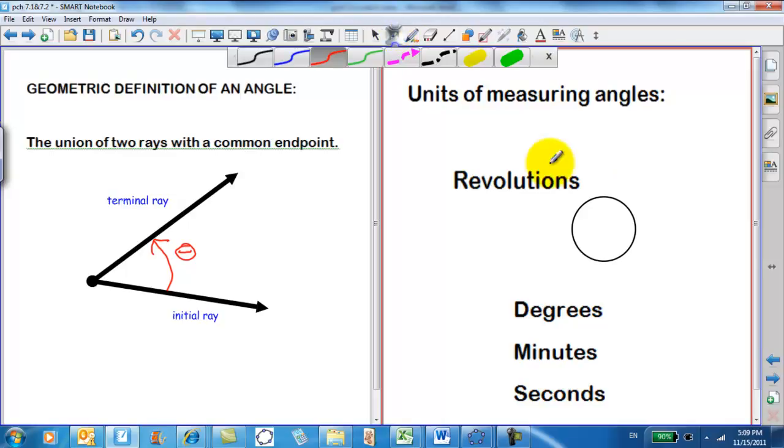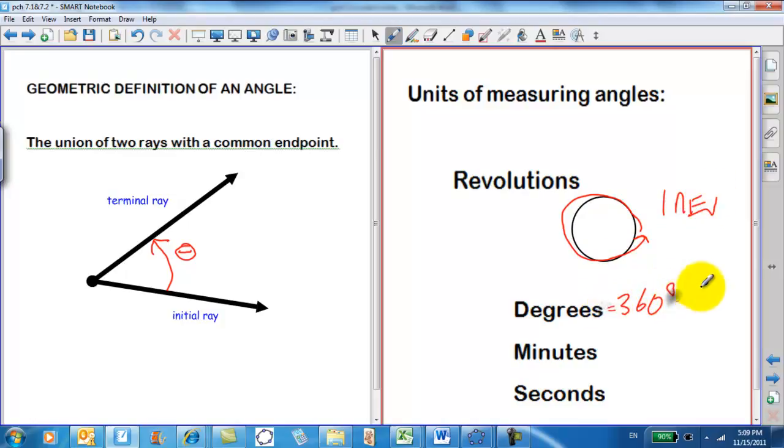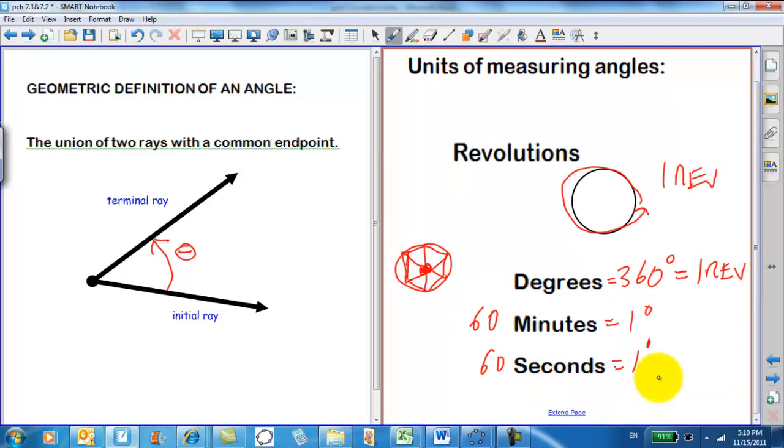If we go once around the circle, that's one revolution. It's also equal to 360 degrees, equals one revolution, based on an old Babylonian system of 60. The theory was that they would take and fit six equilateral triangles in a circle and put 60 degrees at each corner, and that's how they came up with 360. 60 minutes equals one degree, 60 seconds equals one minute, and that's our symbol for minutes, a little prime symbol. You can also do seconds as double prime, 60 seconds equals one minute.